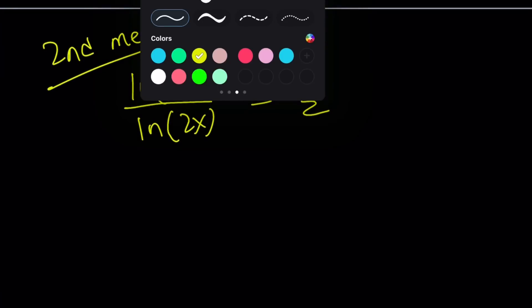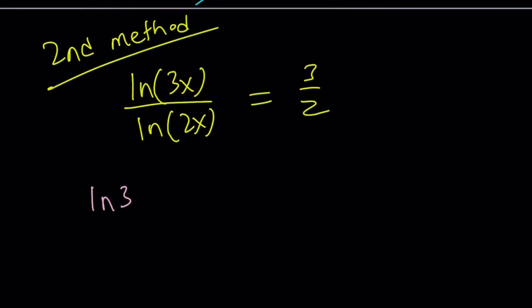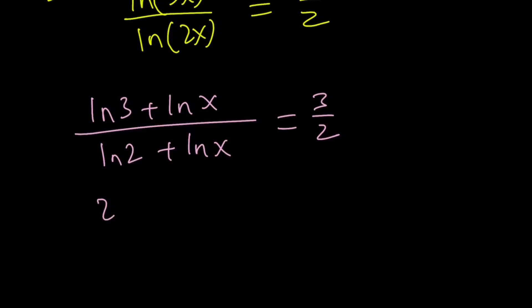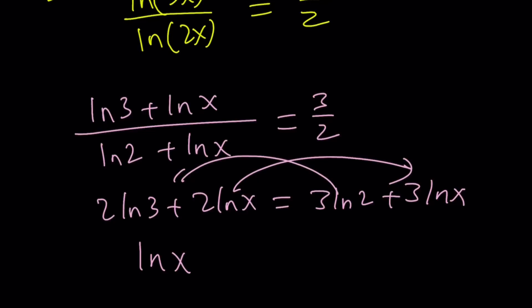So what do you do? Expand ln(3) plus ln(x). Expand ln(2) plus ln(x). Set it equal to 3 halves and do the math. Math says cross-multiply. 2ln(3) plus 2ln(x) equals 3ln(2) plus 3ln(x).